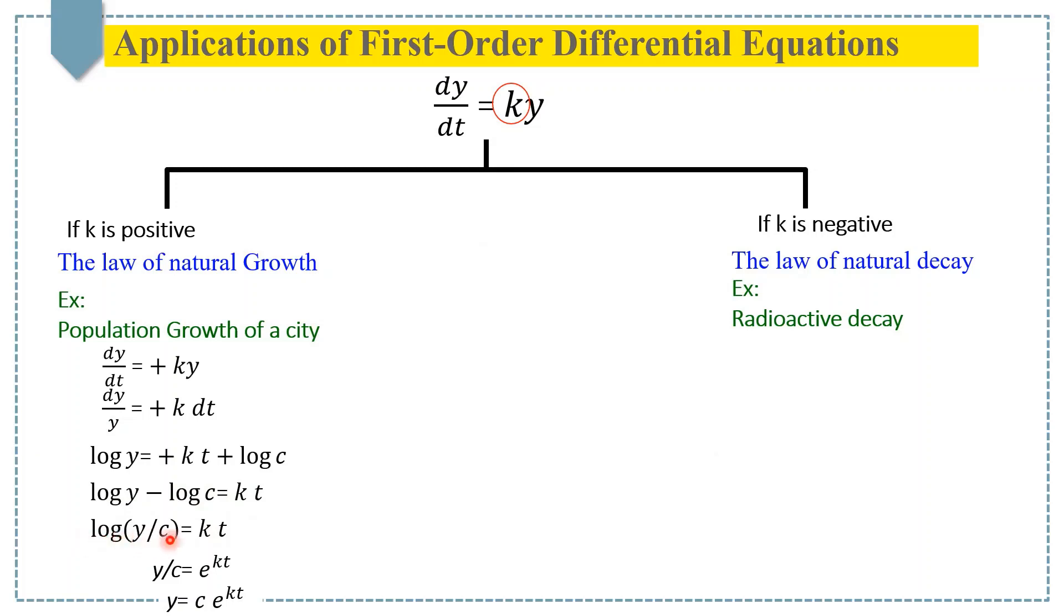Now by removing the log on the left side, we take the exponential of both sides. We get y/c = e^(kt). And simply, we can write this as y = c·e^(kt).